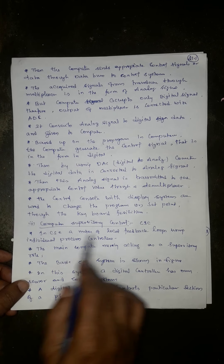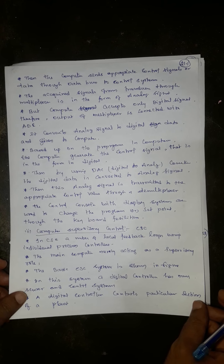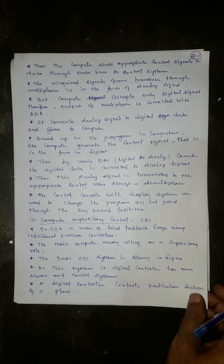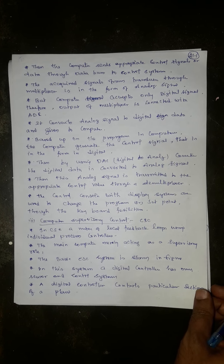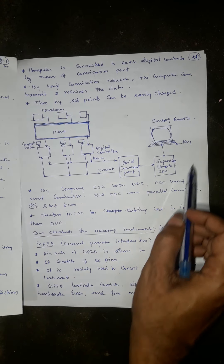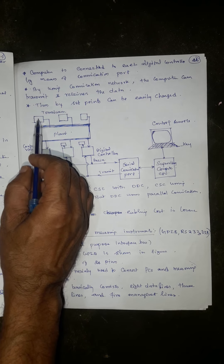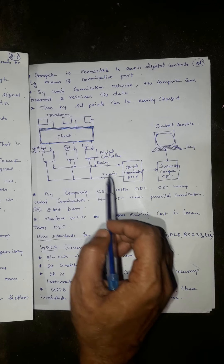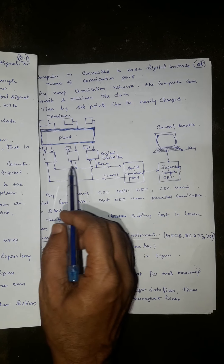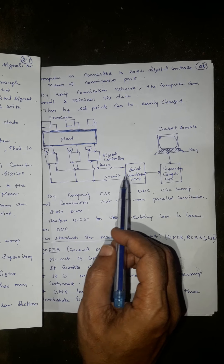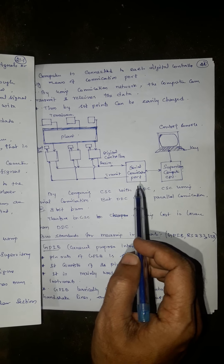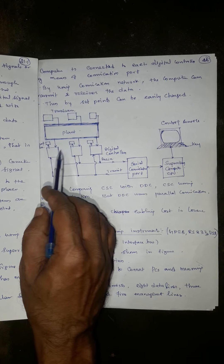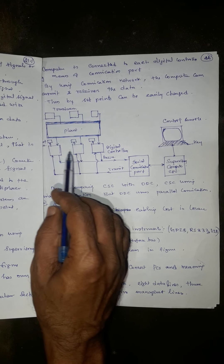The next type is Computer Supervisory Control, or CSE. In CSE, a number of local feedback loops use individual process controllers. The key difference from DDC is that in DDC, transducers and control valves are directly connected to the computer via an analog bus using a multiplexer, demultiplexer, ADC, and DAC. In CSE, there is a dedicated digital controller for each variable or parameter.